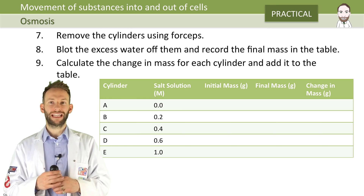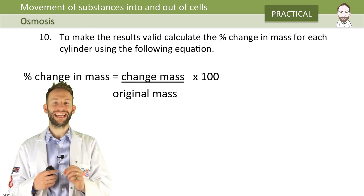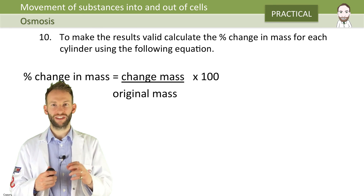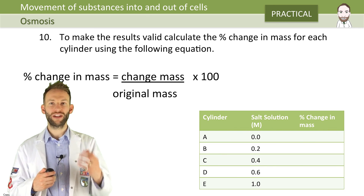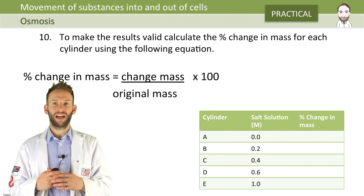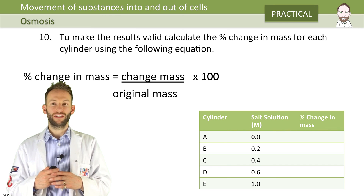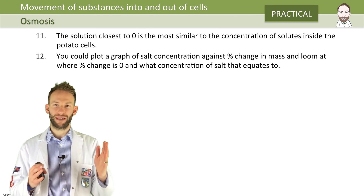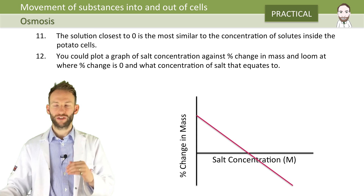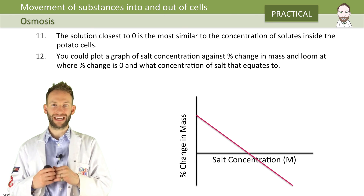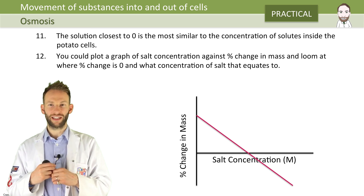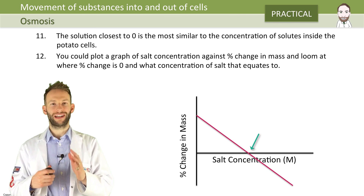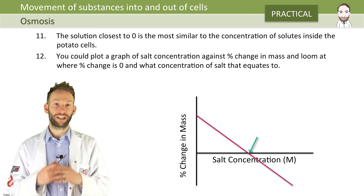The key is to work out the percentage change in mass, as that makes the results more valid and allows us to compare them. You work out percentage change using that equation, and that allows you to plot a graph showing the percentage change in mass against the salt concentration. The first tube at zero salt concentration will show a large gain in mass, and tube E at the opposite extreme will show a large loss in mass. That point at which the line crosses the x-axis — that salt concentration is equivalent to the concentration inside those potato cells.